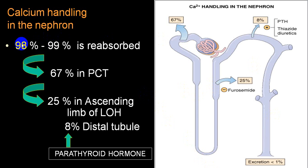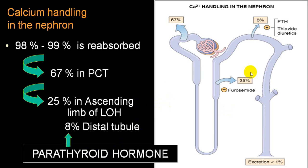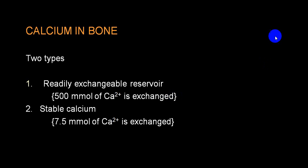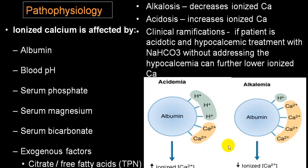At the renal level, of whatever is filtered, 67% is absorbed in the proximal tubule, 25% in the ascending loop of Henle, and 8% in the distal convoluted tubule. Parathormone acts at the distal convoluted tubule, thiazide diuretics can also act there, while furosemide acts at the loop of Henle.